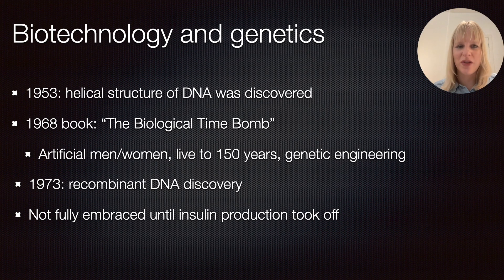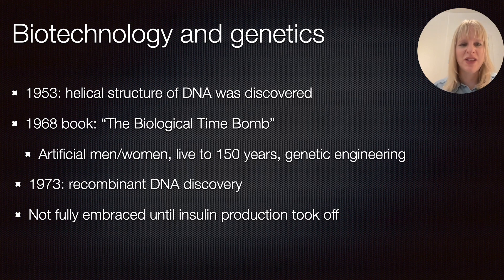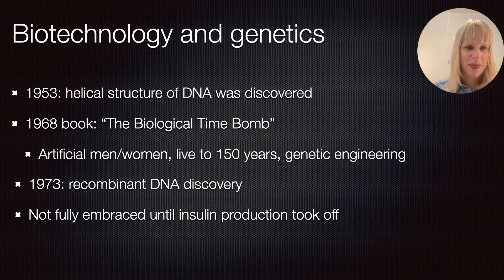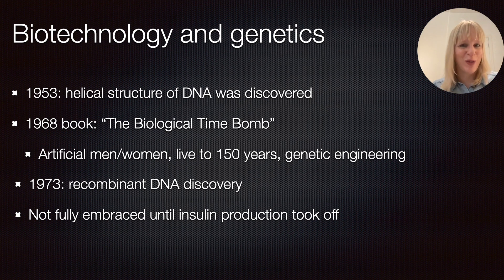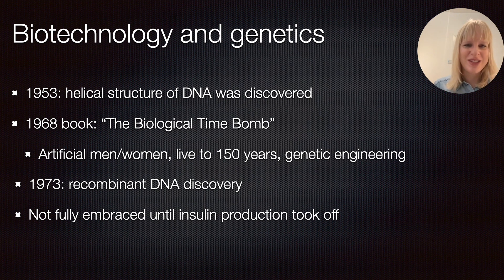The helical structure of DNA was discovered in the 1950s, opening up new applications — particularly in the 1970s with recombinant DNA technology, which allowed enzymes to copy and paste genes into different regions, enabling manipulation of properties. There was significant resistance to this, seen in the 1968 book 'The Biological Time Bomb', which warned about the dangers of genetic engineering, predicting things like marrying robots or living to 150 years.